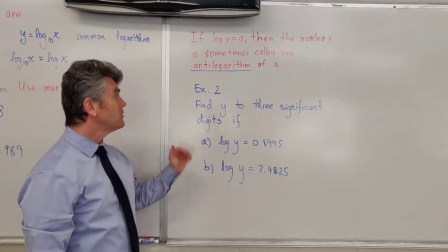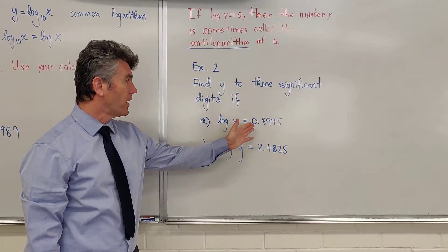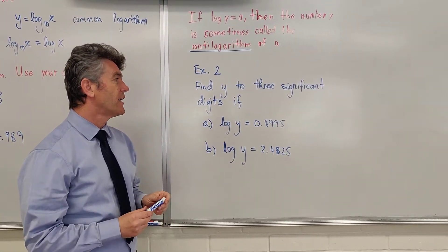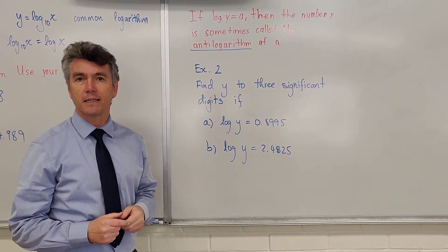So let's do example 2. What are we told? We're told log of y is equal to 0.8995 and we're asked to find y to 3 significant digits.